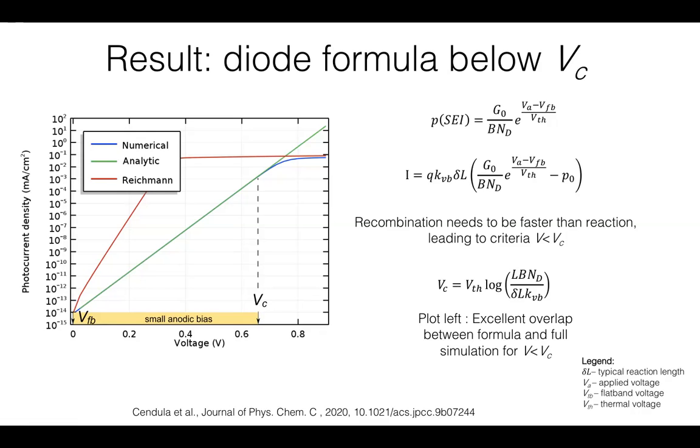And this condition that recombination is faster than reaction leads to the criteria that this model holds below the critical voltage Vc, given with this expression derived in our paper.